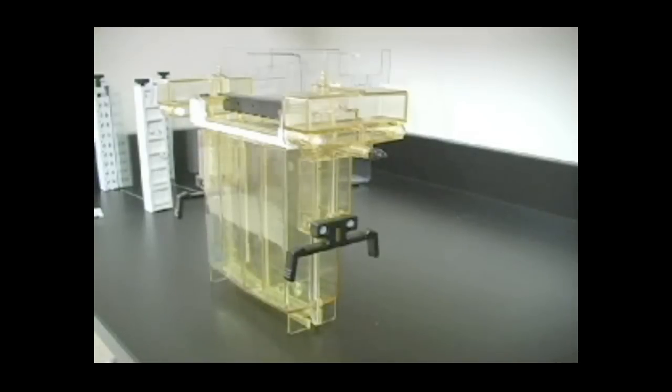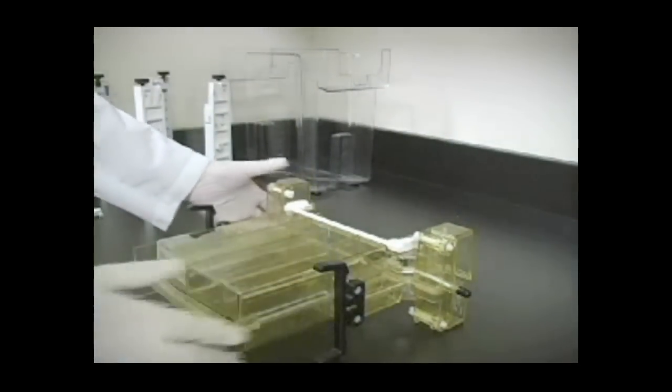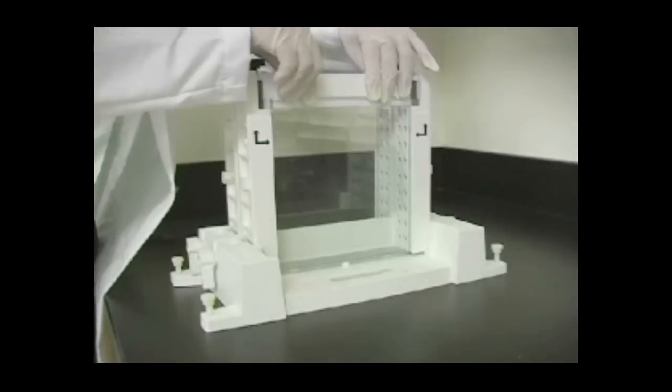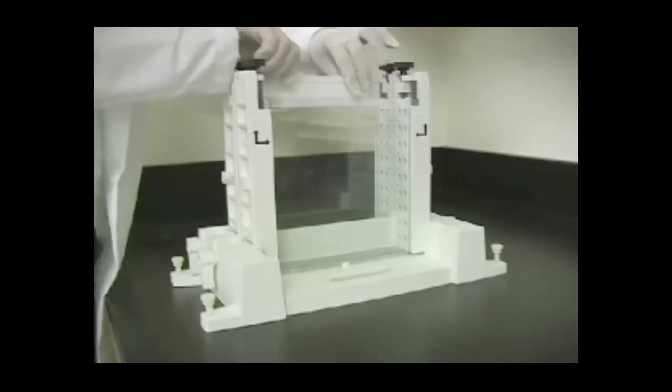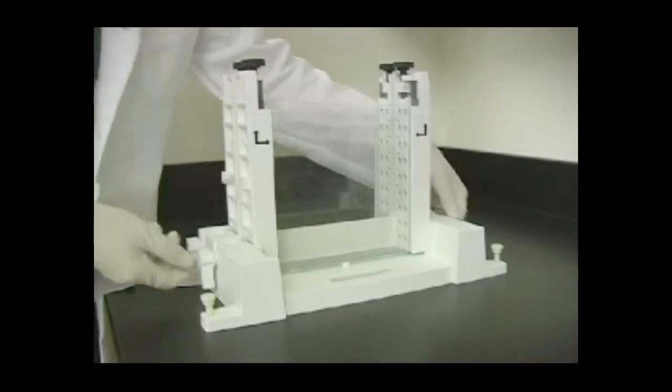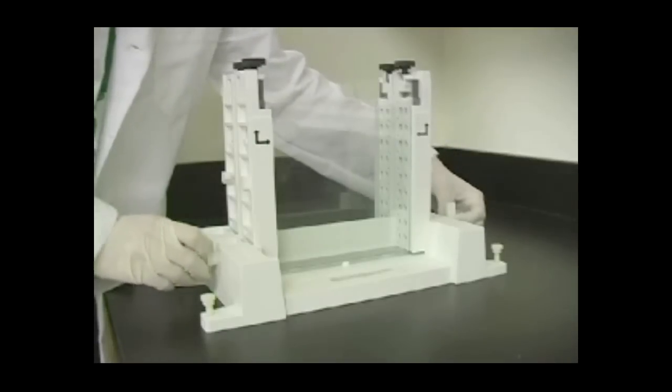Lay the central cooling core down on a lab bench. If applicable, remove the comb from the polymerized gel. Release the gel sandwich from the casting stand by turning the cams to the up position and pulling them outward. Pull the gel sandwich straight out of the stand.